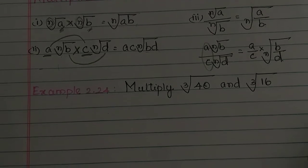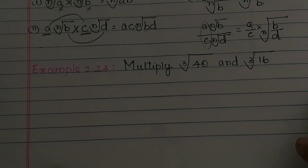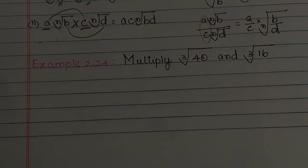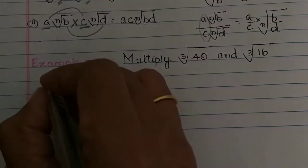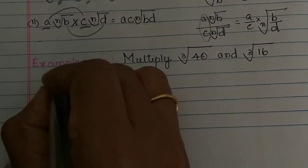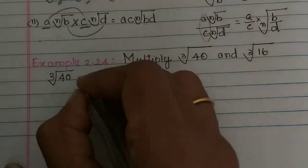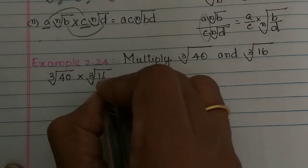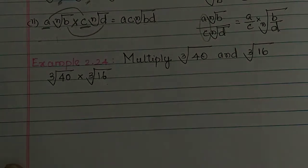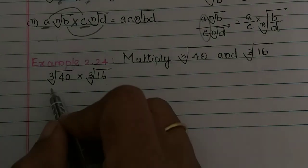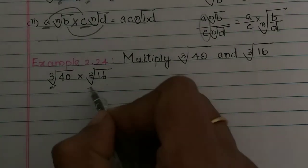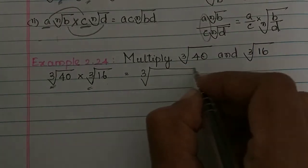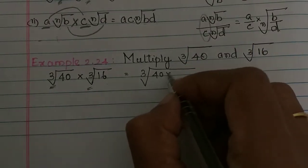Example 2.24: multiply the cube root of 40 and the cube root of 16. We multiply the two things together. Since the indices match, we combine them: cube root of 40 into cube root of 16 equals cube root of 40 × 16.